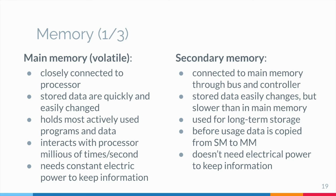The main characteristics of main memory are: it is closely connected to the processor; stored data are quickly and easily changed; it holds the programs and data that the processor is actively working with; it interacts with the processor millions of times per second; and it needs constant electric power to keep its information.